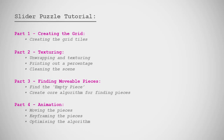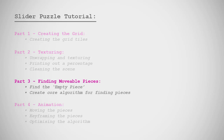Welcome to part three of the Slider Puzzle tutorial. So far we've created our grid and applied the texture to it. We'll now be looking at how we can find the empty square of the puzzle that the pieces will move into. We'll also be creating the very core of how this effect works, which is the algorithm that finds which pieces can be moved each turn or move of the puzzle.